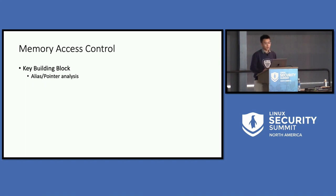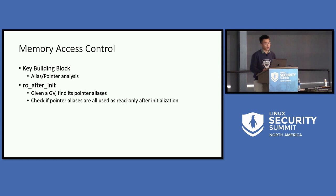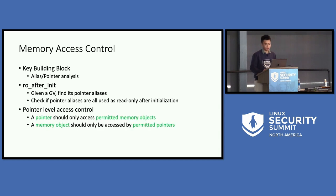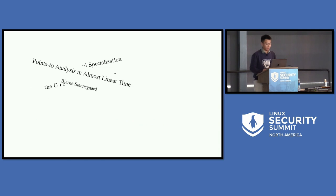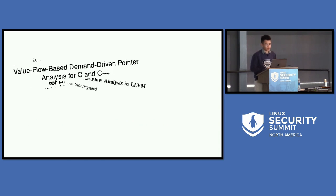We realize that the key building block to derive memory-level access control rules is alias analysis, or pointer analysis. For example, given a global variable, if we can find all its pointer aliases — all the pointers that might point to it — and check if they are all used as read-only after initialization, then we can confirm it could be RO after init. And for more fine-grained access control, alias analysis will naturally derive the points-to set of the pointers and the pointer set of the object. But in past decades we have many great works on alias analysis. So why do we need yet another alias analysis?